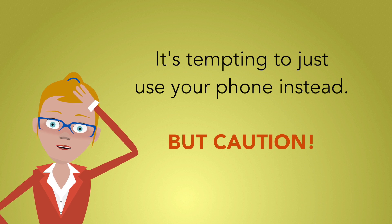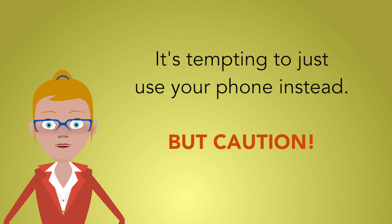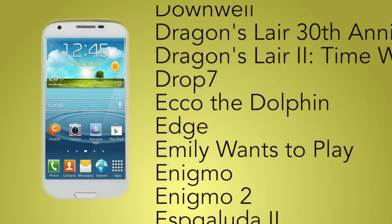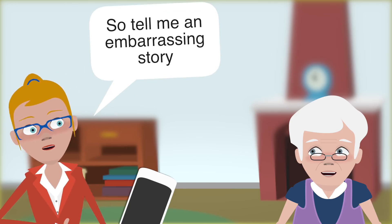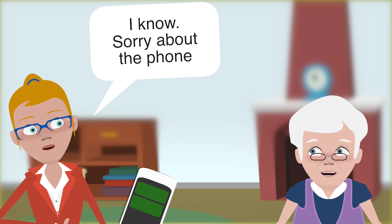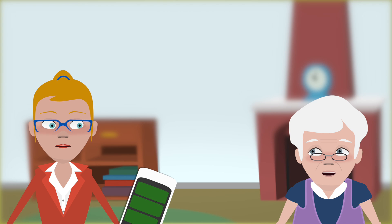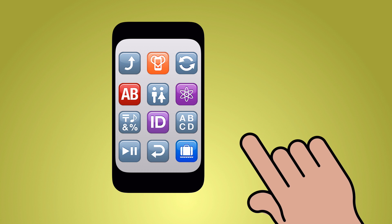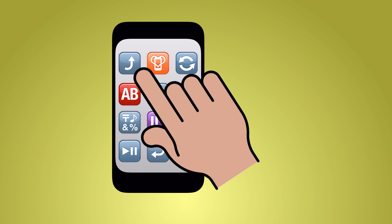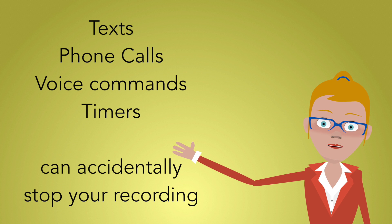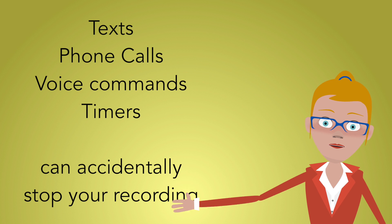Increasingly, people want to use their smartphones to record conversations. But it's not that smartphones can't do the job — it's that smartphones often do a number of jobs at the same time. If you're doing an interview and you get a text while you're recording, it can be distracting and could also potentially disrupt the recording. You might look at your text and accidentally turn off the recording device. The same thing can happen with phone calls, timers, or any number of things you use your smartphone for.